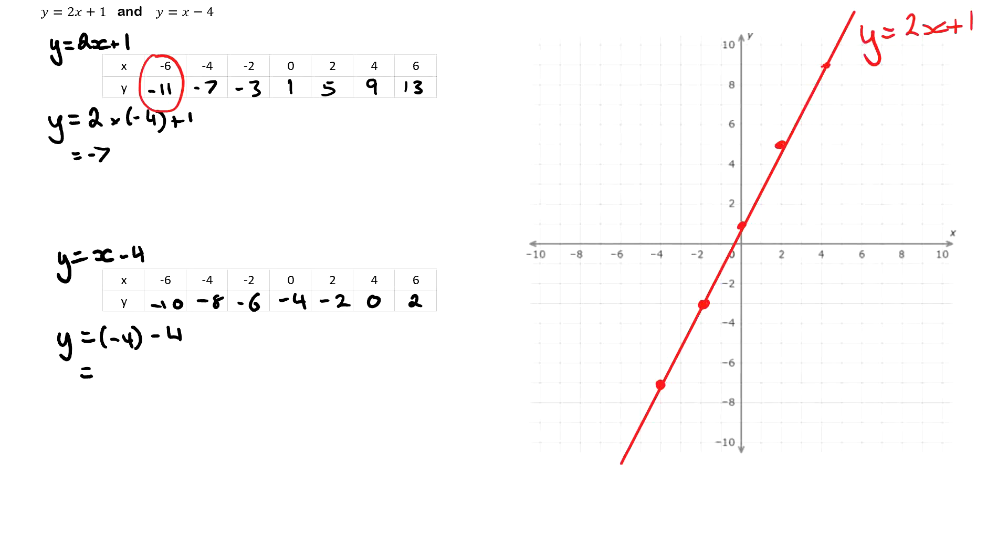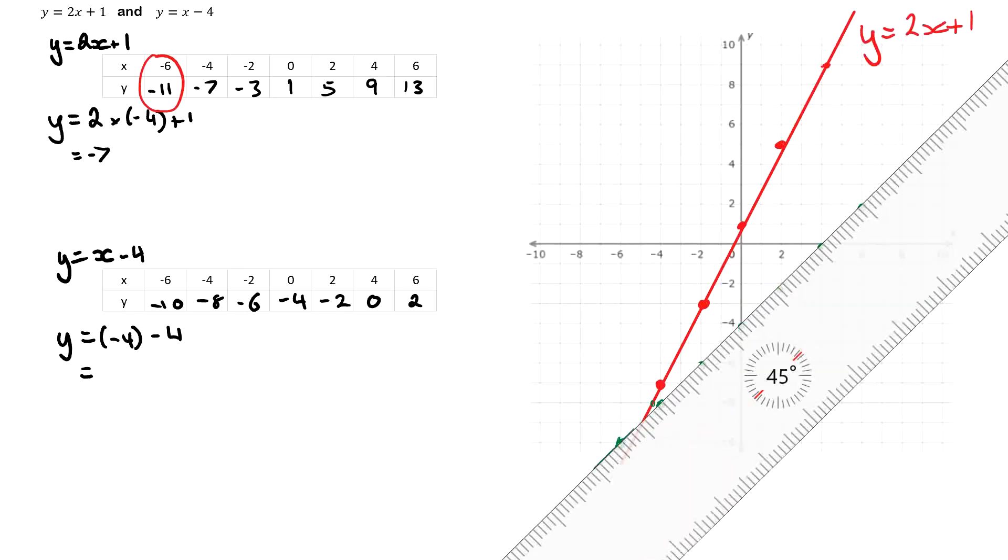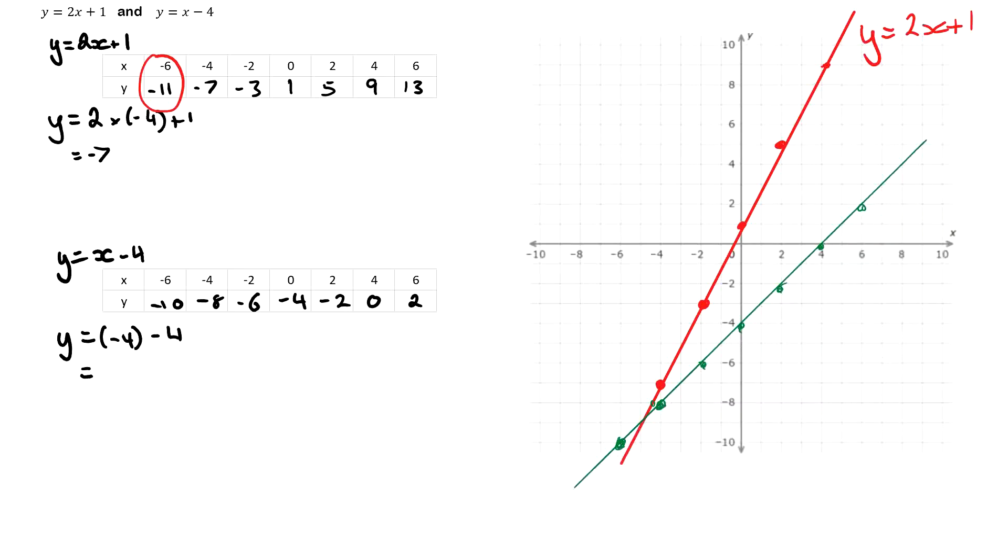We have negative 6, negative 10. Then negative 4, negative 8. Negative 2, negative 6. 0, negative 4. 2, negative 2. And then we draw a line.